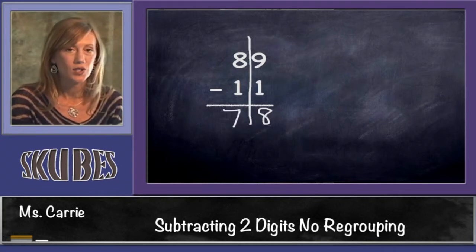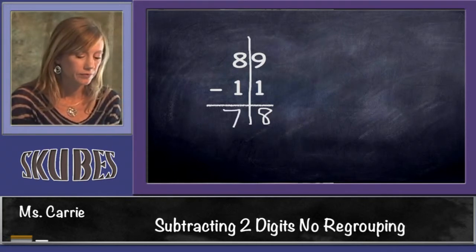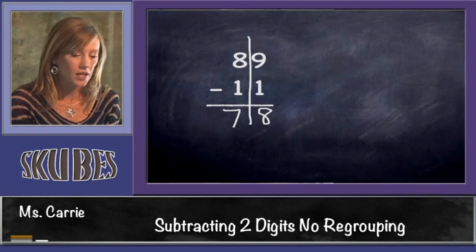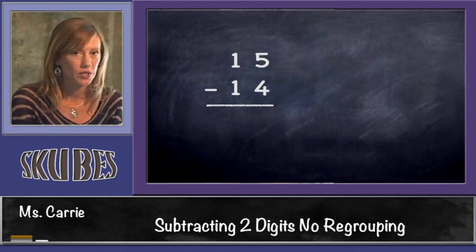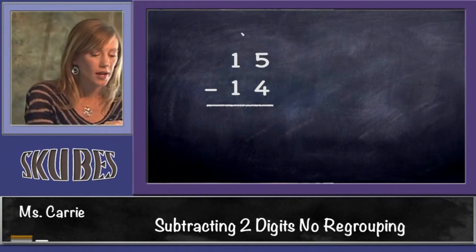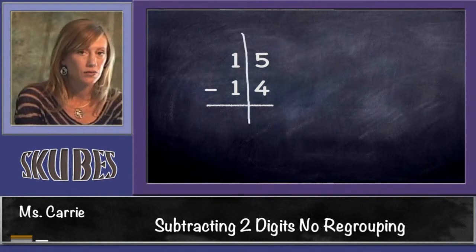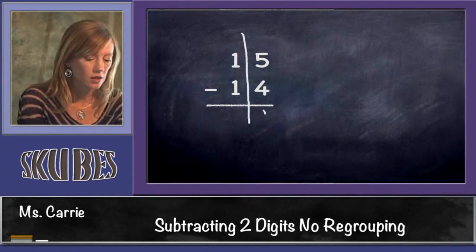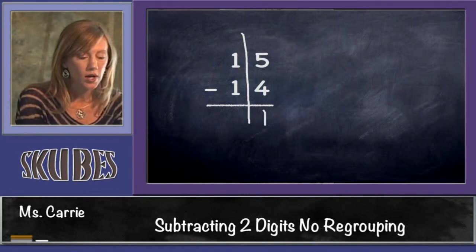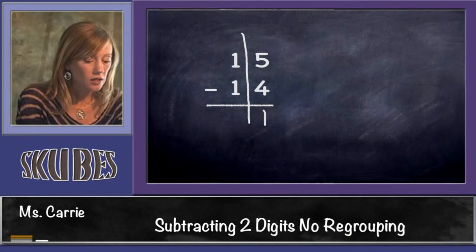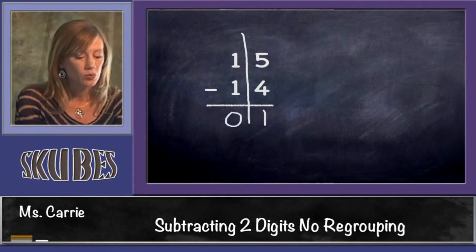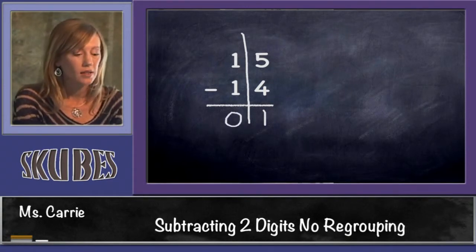Let's try 15 minus 14. Draw our line down the middle. We know that 5 minus 4 is 1, and 1 minus 1 is 0. We don't need to put the 0. We can, but we wouldn't read this number 01. The answer would just be 1.